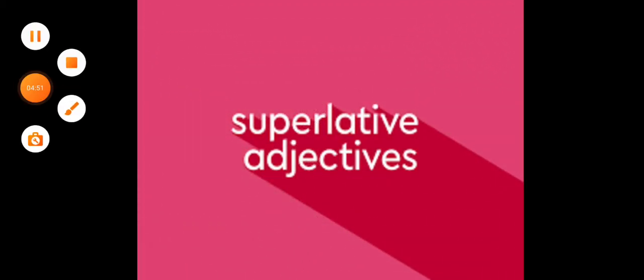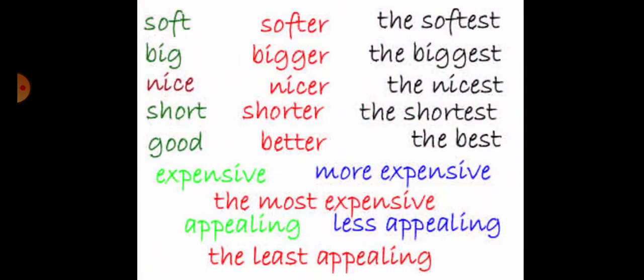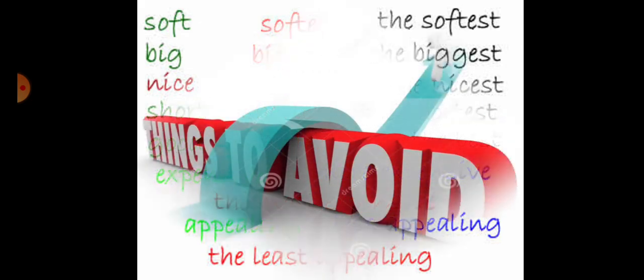Now I'm going to tell you about the usage of superlative adjectives. We make common mistakes while using superlative degree—we write it alone, which is completely wrong. We should use the definite article 'the' with the third degree of adjective. For example: the softest, the biggest, the nicest, the shortest, the most expensive, the least appealing. Always remember to use the article 'the' with superlative degree.